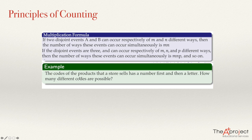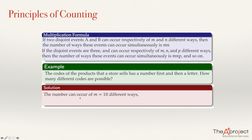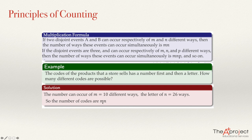For example, assume that the code of a product that a store sells has a number first and then a letter. How many different codes are possible? We know that the number at the beginning can occur in ten different ways — the ten different digits zero through nine. And the letters, if we use the English alphabet, can occur in 26 ways. So the number of codes will be M times N, which is ten times 26, and this is 260.